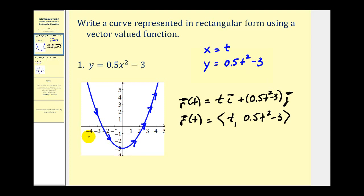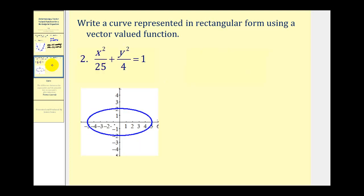Let's take a look at one that's a little bit more involved. Here we want to write the equation x squared divided by 25 plus y squared over 4 equals 1 as a vector-valued function. First we should recognize this as an ellipse as we see sketched here. The next thing we have to remember is the trig identity that sine squared theta plus cosine squared theta equals 1.